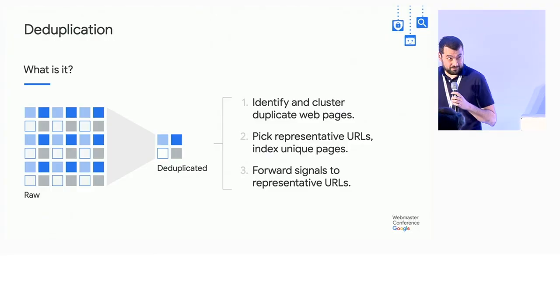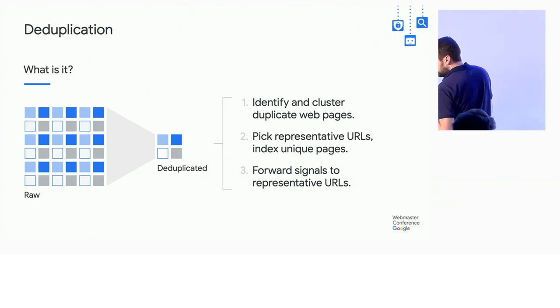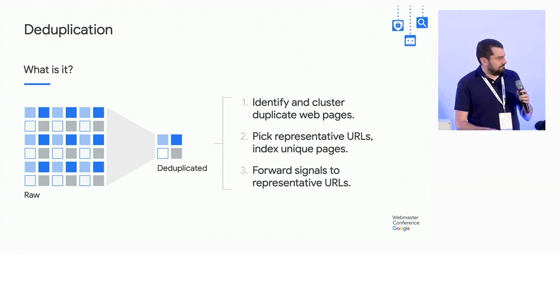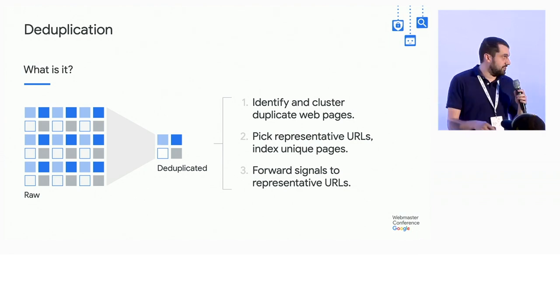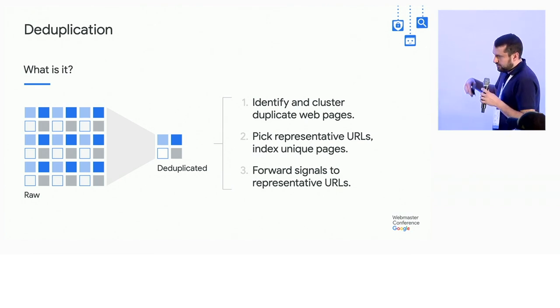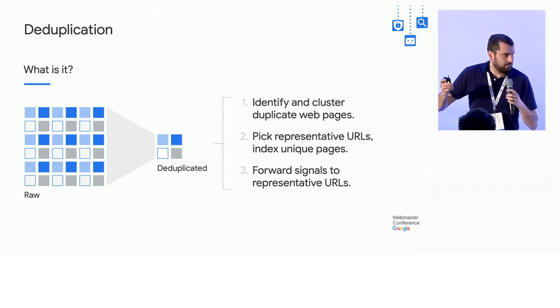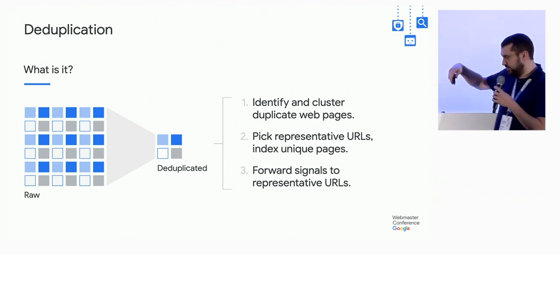My name is Alan and I'm here to talk about web deduplication. What we do is identify and cluster duplicate web pages — anything that looks the same. We take these clusters, pick representative URLs that actually get put into the index and served to users at search time. In the process, we generate a mapping from dupes to these representative URLs, which we usually call canonicals. We forward the signals some of the time so that these deduplicated pages don't just lose their signals.